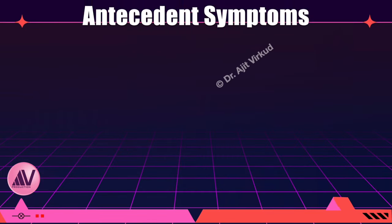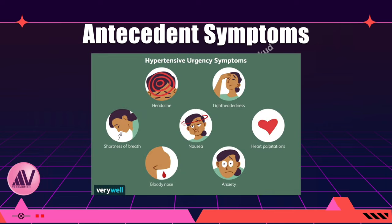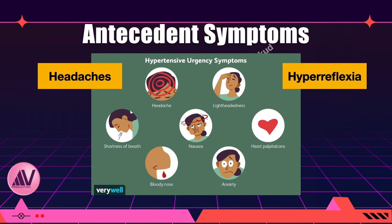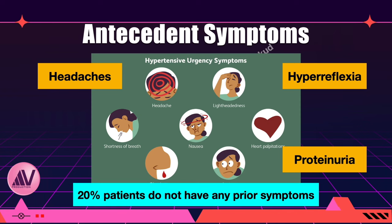The three most common symptoms or signs that precede the onset of a seizure are headache, hyperreflexia, and proteinuria, occurring in more than 80 percent of cases. Other common antecedent symptoms are edema, clonus, visual disturbances, and epigastric pain due to stretching of the liver capsule. Having said that, it is important to remember that 20 percent of patients who present with an eclamptic seizure do not have any prior symptoms, nor any abnormal laboratory reports.